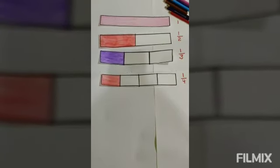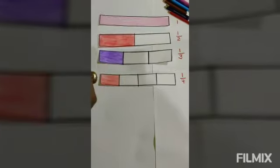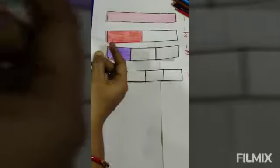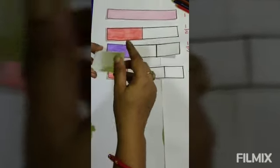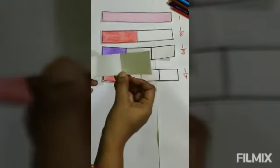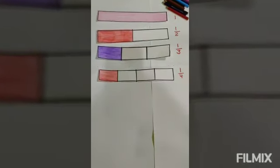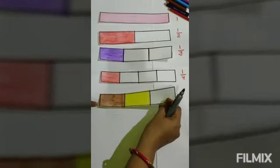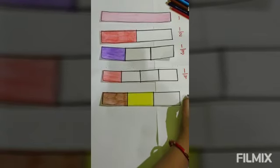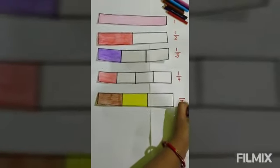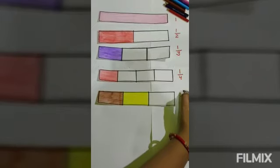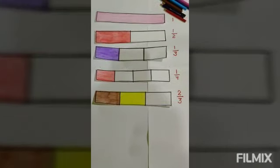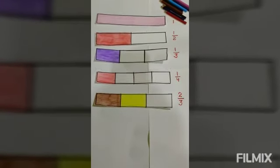Now again we take one strip and fold it into three equal parts — you have to fold it in such a way to get equal parts. Now we have got three equal parts. This time we color two parts out of these three equal parts. The total number of parts are three and the number of parts colored are two, so the fraction is two thirds, or two by three.